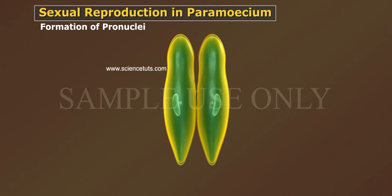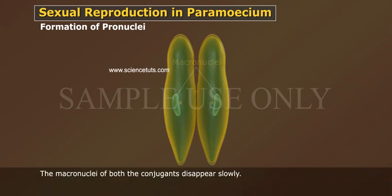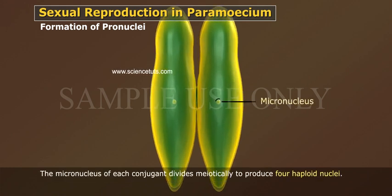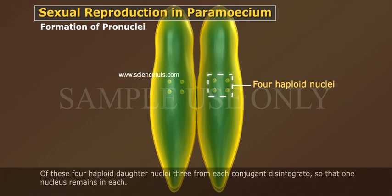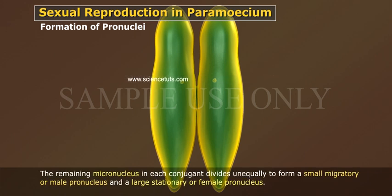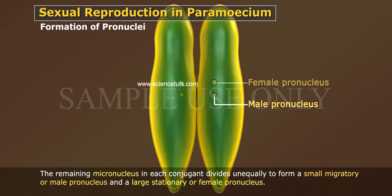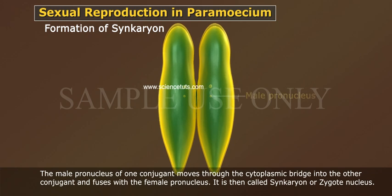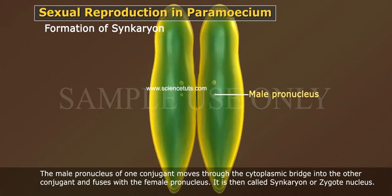Formation of pronuclei: the macronuclei of both conjugants disappear slowly. The micronucleus of each conjugant divides meiotically to produce four haploid nuclei. Three of these four haploid daughter nuclei from each conjugant disintegrate, so one nucleus remains in each. The remaining micronucleus divides unequally to form a small migratory male pronucleus and a large stationary female pronucleus. The male pronucleus of one conjugant moves through the cytoplasmic bridge into the other conjugant and fuses with the female pronucleus.